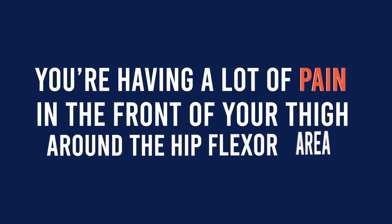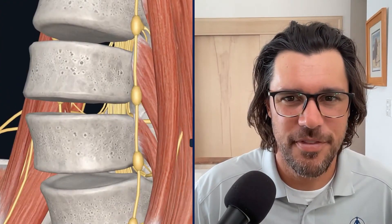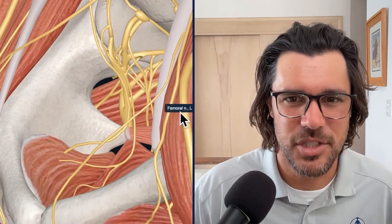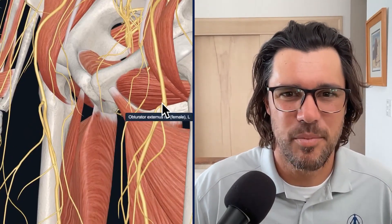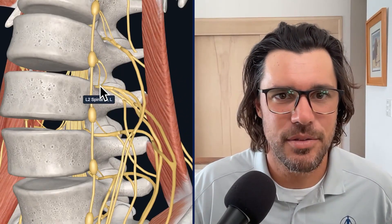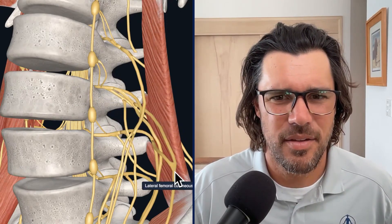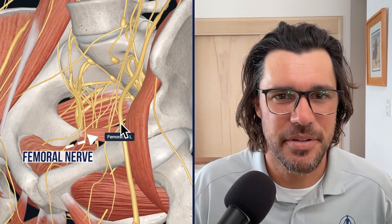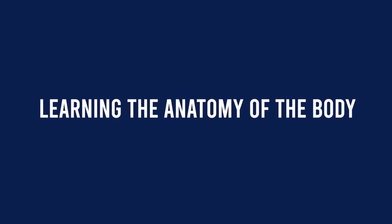If you're having pain in the front of your thigh around the hip flexor area, there could be nerve compression happening in the spine affecting other nerves too. The femoral nerve goes to the front of the thigh and branches out to other nerves there. It originates in the lumbar spine — L2 and L3 spinal nerves feed into the femoral nerve. This femoral nerve runs right next to a hip flexor. Learning the anatomy helps figure out what's going on.